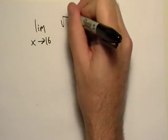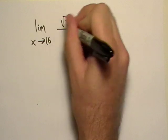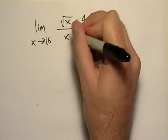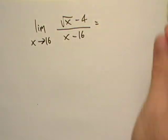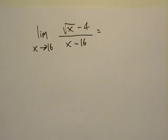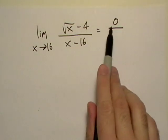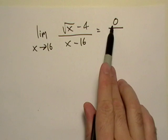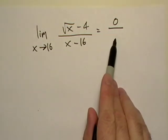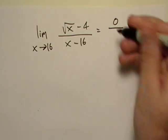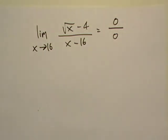These ones are pretty common. Let's see here. Right off the bat, if we put 16 in, we get square root of 16, we get 4 minus 4. Now, that's not a problem. If the numerator is 0, it's not a problem as long as the denominator isn't 0. But as we can see, it is a problem.